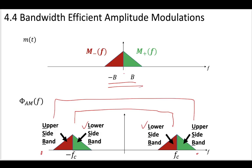So transmitting either the upper sideband or the lower sideband would contain all of the information required. And it would also reduce the amount of bandwidth you need by half.